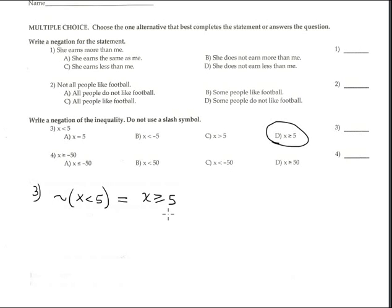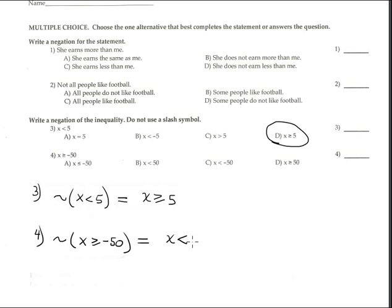Number four: the negation of 'x is greater than or equal to negative 50' is 'x is less than negative 50,' which corresponds to option C.